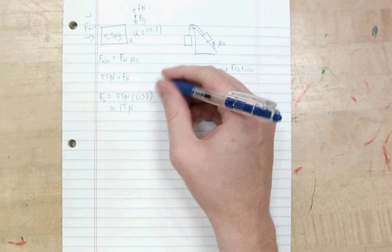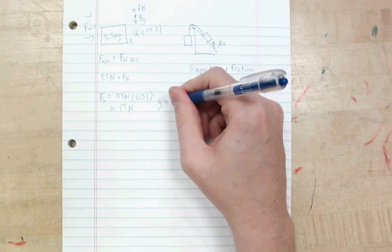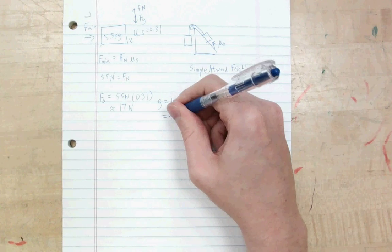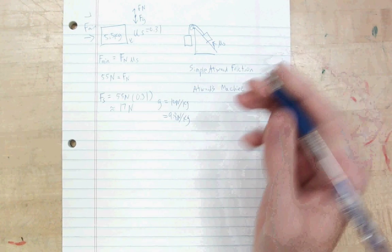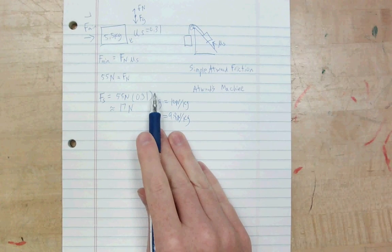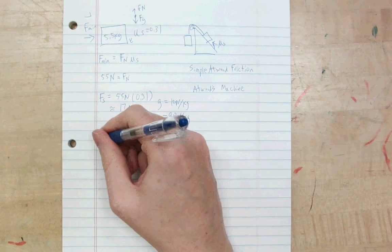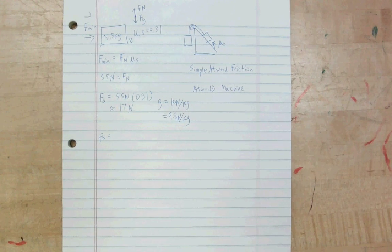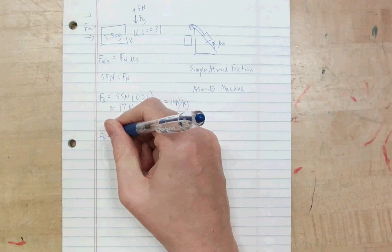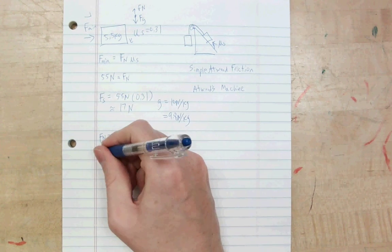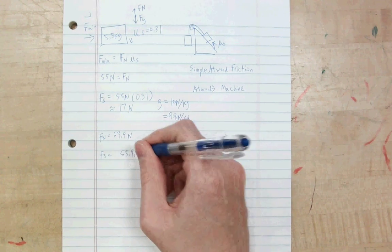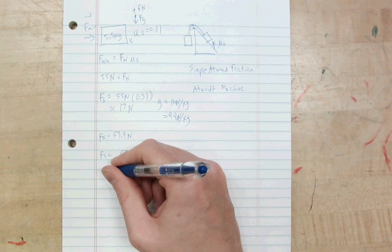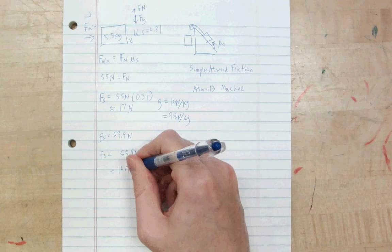Now, I did my favorite thing of saying that little g on Earth is about 10 newtons per kilogram, when WebAssign would expect you to use 9.8 newtons per kilogram. So we can do that real fast to see how it would work if I were more careful. So my normal force would become 5.5 times 9.8, which would be 53.9 newtons. And my static friction force would be 53.9 newtons times 0.31, which would be 16.7 newtons.